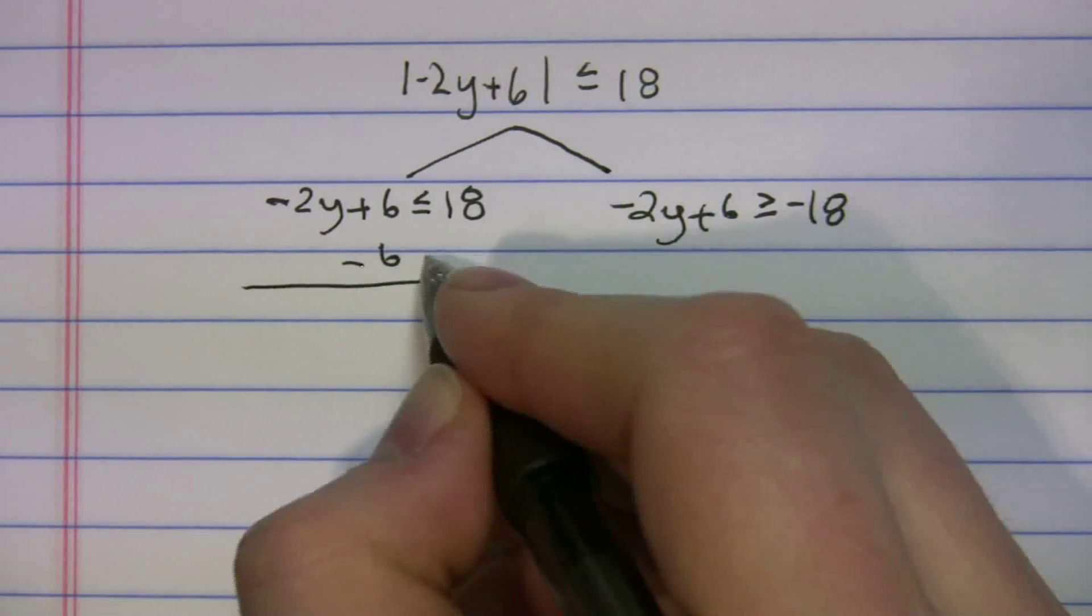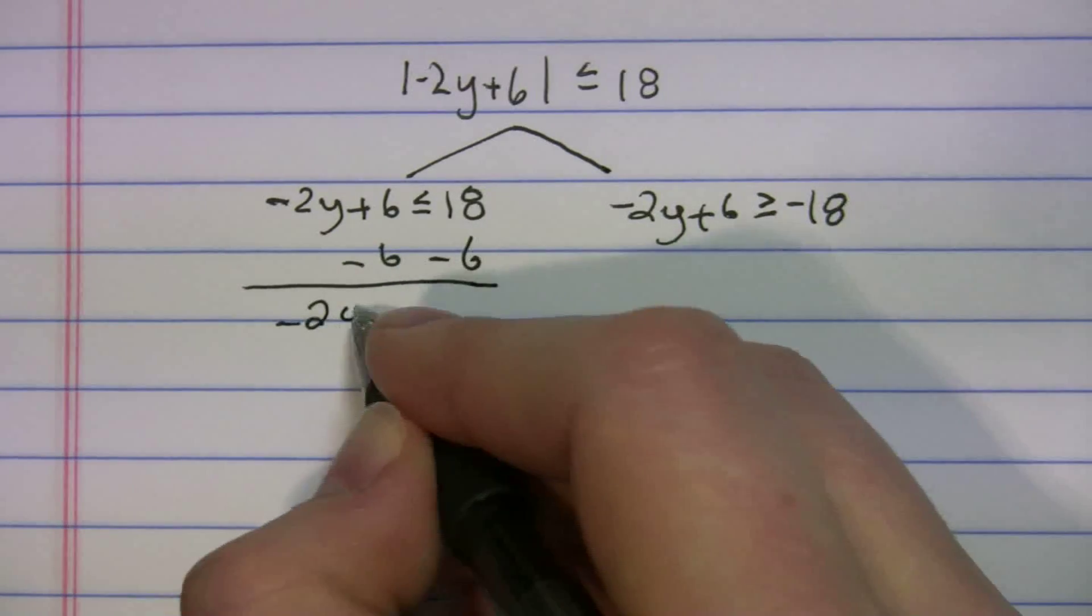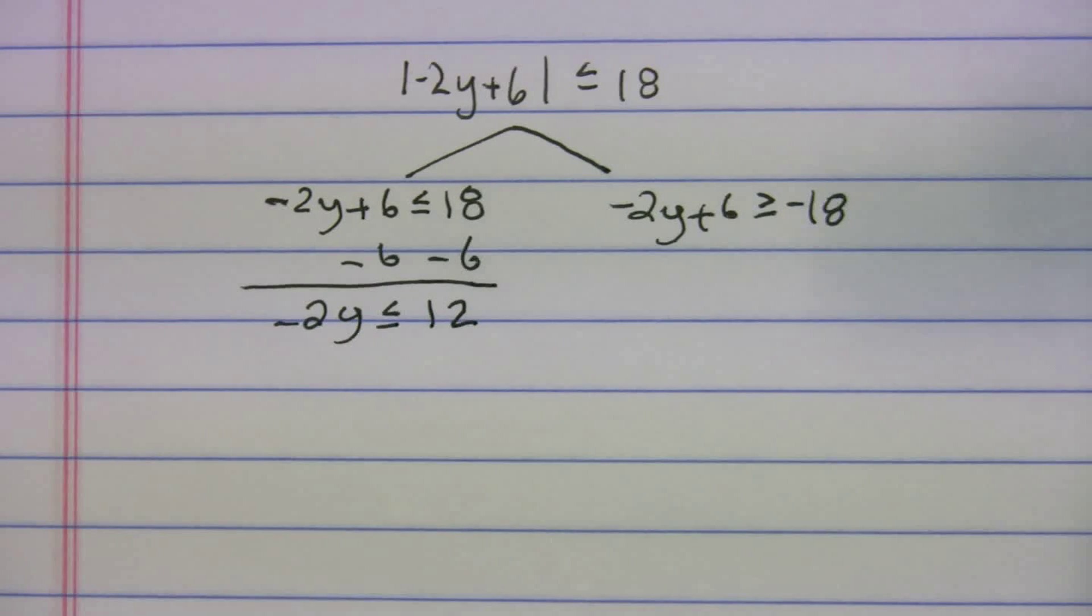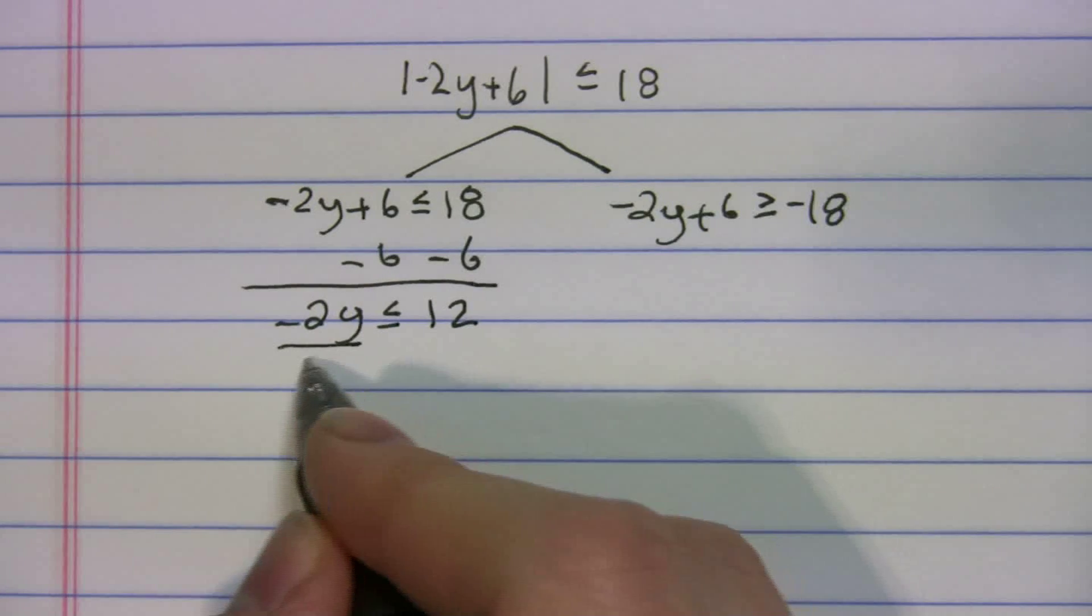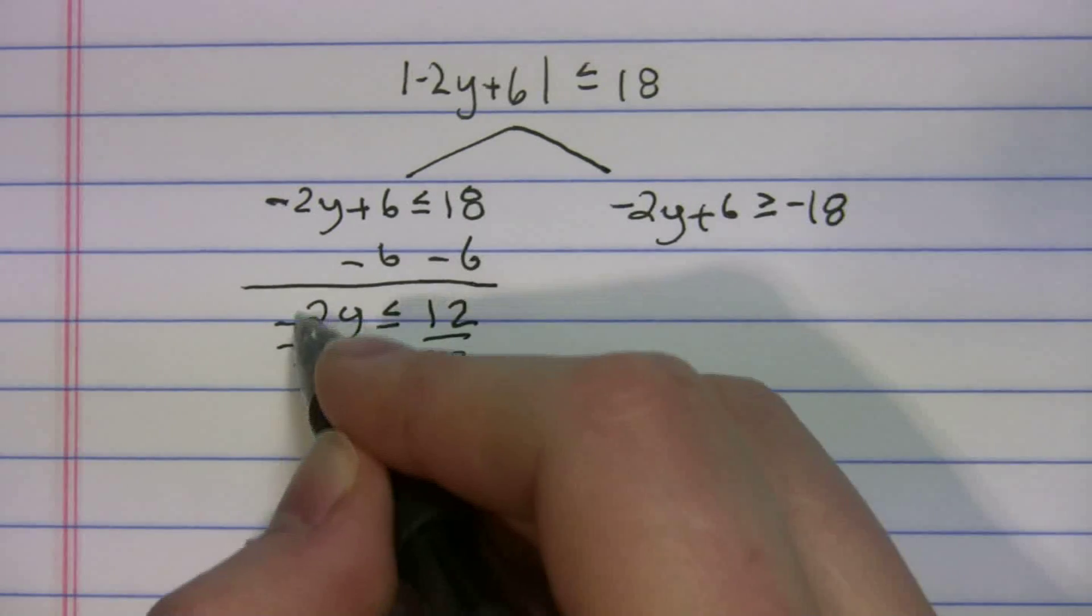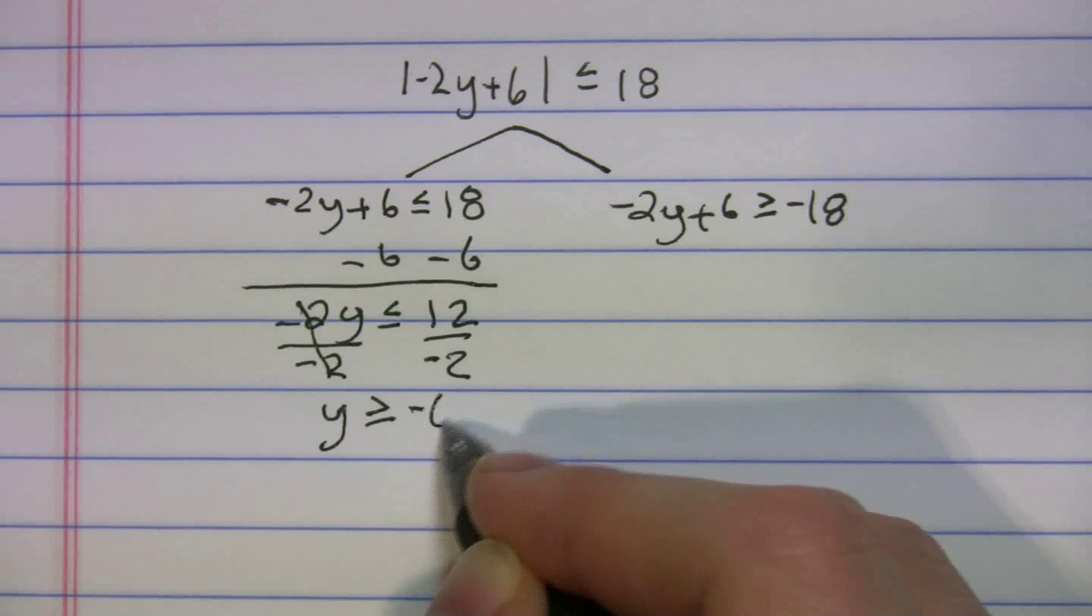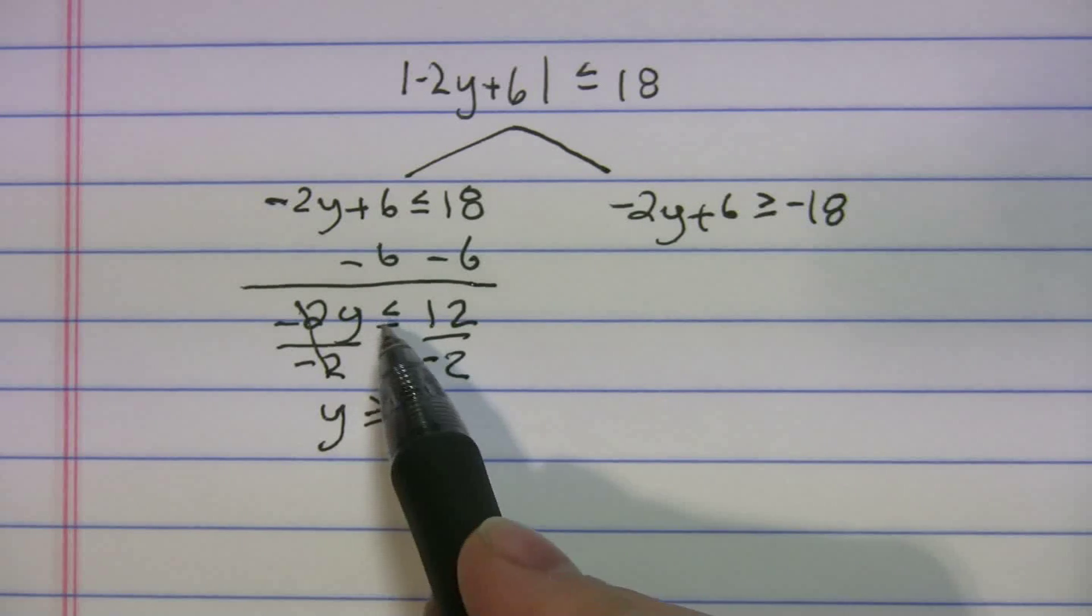Okay. Let's solve. We get -2y is less than or equal to 12. Here's where we just got to remember our rule. We're dividing by a negative number, that -2. So what happens? We have to flip the sign. Okay. We had to flip that sign over.